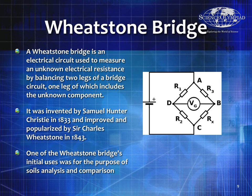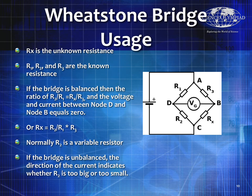The Wheatstone Bridge was an electrical circuit used to measure unknown electrical resistances by balancing two legs of a bridge circuit, one of which includes the unknown component. It was invented in 1833 by Samuel Christie but is named after Sir Charles Wheatstone, who improved upon it in 1843. It was used a lot for soil analysis and comparison, using very high precision resistors, because measuring voltage was easy but measuring resistance was much tougher.